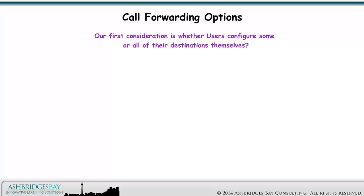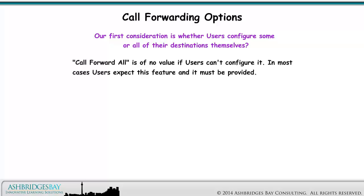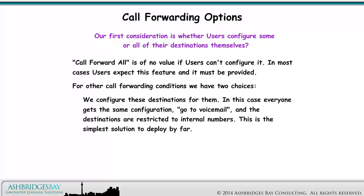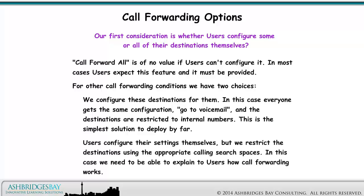Our first consideration is whether users configure some or all of their destinations themselves. Call forward all is of no value if users can't configure it — in most cases users expect this feature and it must be provided. For other call forwarding conditions, we have two choices: we configure these destinations for them, in which case everyone gets the same configuration (go to voicemail) and destinations are restricted to internal numbers — the simplest solution to deploy. Or they configure their settings themselves, but we restrict the destinations using the appropriate calling search spaces, in which case we need to be able to explain to users how call forwarding works.